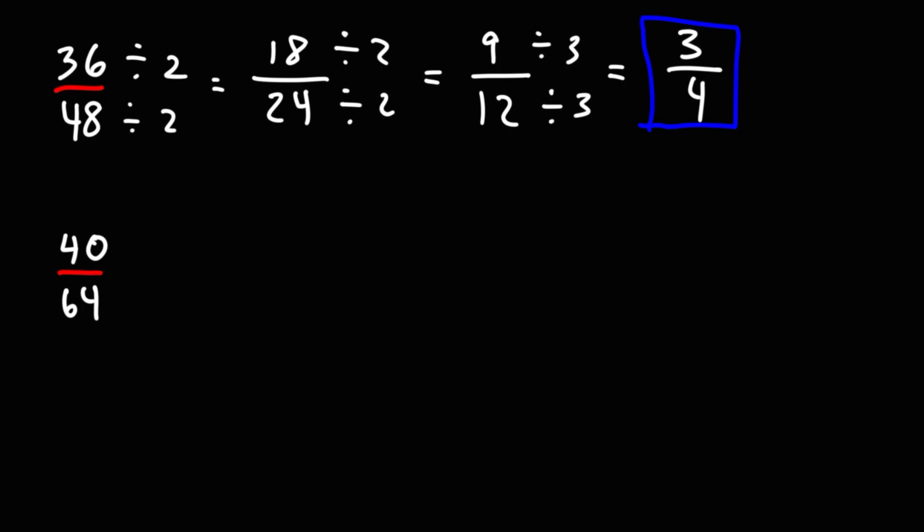Now for the next example we have two even numbers. So we could start by dividing each of them by 2. Half of 40 is 20. Half of 64 is 32. So we still have even numbers. We could divide by 2 again. This will give us 10 over 16. And we could divide by 2 again.